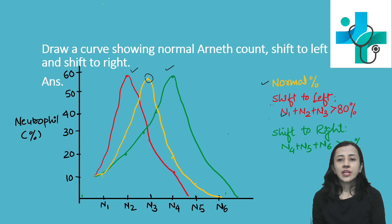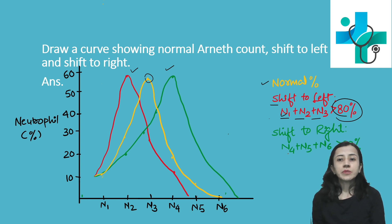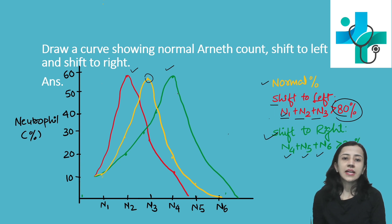Shift to left: when the cumulative percentage of N1, N2, and N3 is more than 80%, this is known as shift to left, depicted in red on the graph. Shift to right: when the cumulative percentage of N4, N5, and N6 is more than 20%, this is termed shift to right, shown in green.